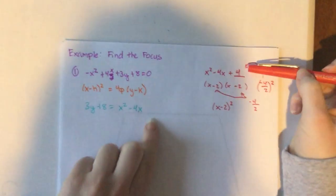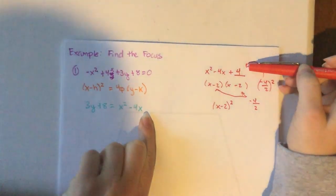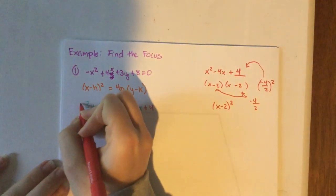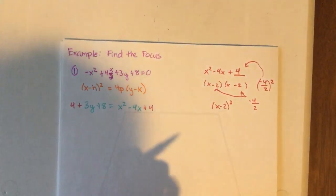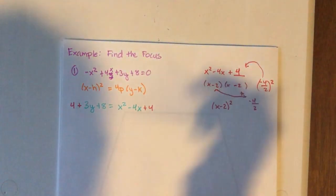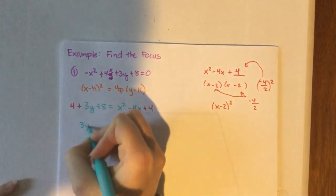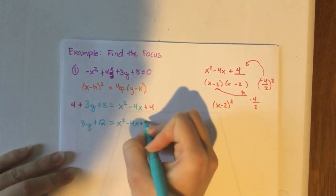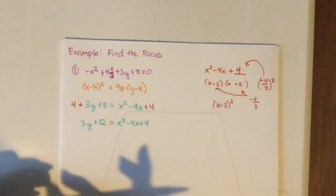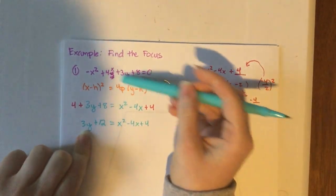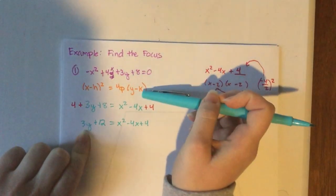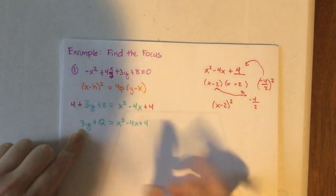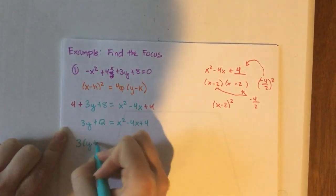So what I'm going to do is I'm going to add 4 to complete this square. If I add 4 to the right side of the equation, I also need to add 4 to the left side. So now what we have is 3y plus 8 plus 4 is 12, equals x squared minus 4x plus 4. Looking at this y minus k, you see how there's something out front. We factor out a GCF. Essentially, that's what 4p is, is factoring out the GCF. So what's the GCF here? Obviously, 3. So I'm left with y plus 4.